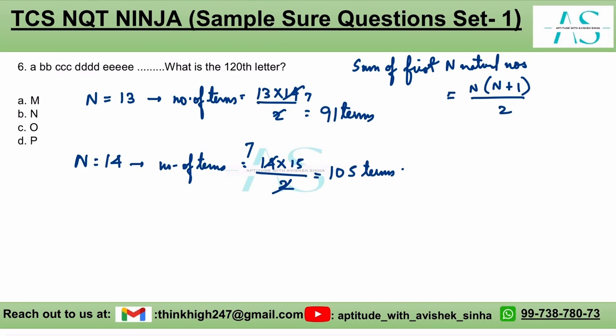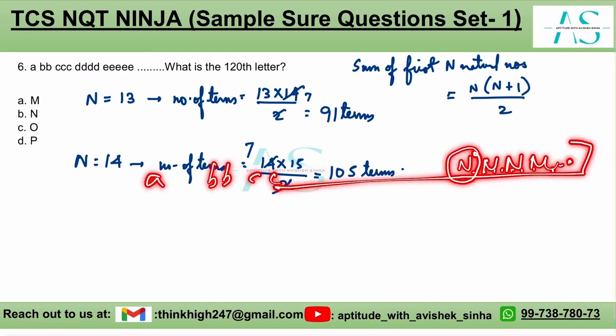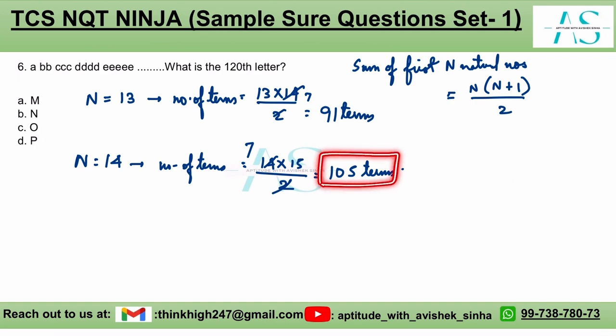Now what do we know from this? It means if we look at the 14th term, the 14th term is N. So till the 14th term, N would be 14 times, and if we start from a b b c c c and go up to these many times, we have covered 105 terms.